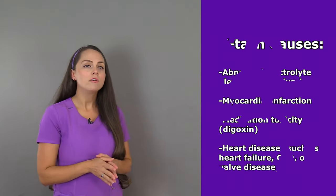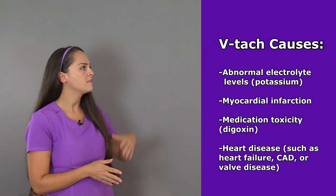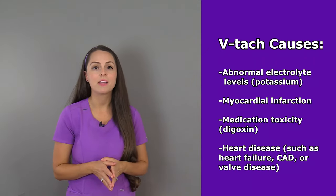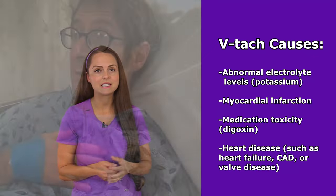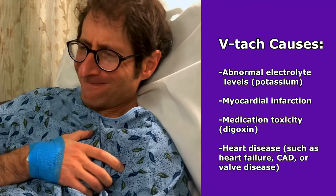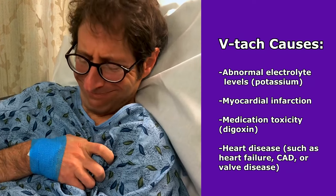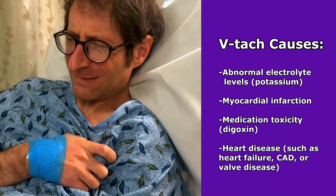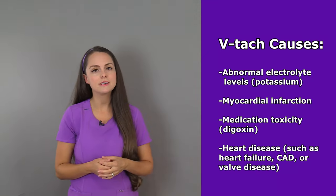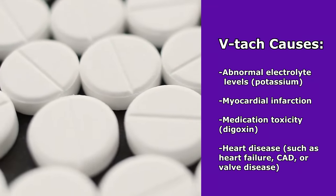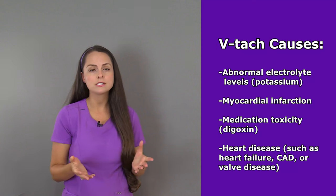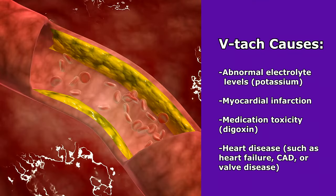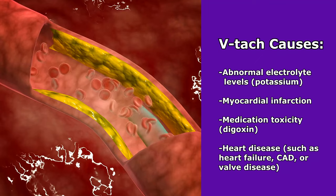What can cause VTAC? If a patient is having abnormal electrolyte levels, especially abnormal potassium like hypokalemia, it can lead to this. Or if a patient has had a myocardial infarction where there's a lot of damage to that heart tissue, which will affect how the electrical conduction system works. Medication toxicity can also lead to this, like digoxin toxicity, or if a patient has heart disease — specifically heart failure, coronary artery disease, or some type of valve disease.